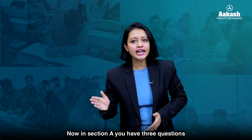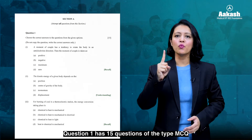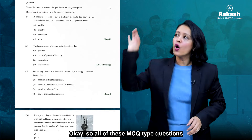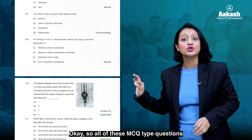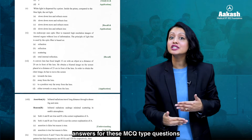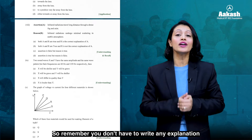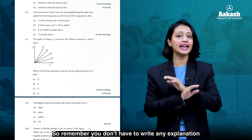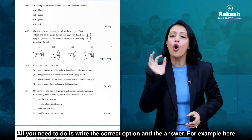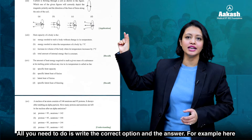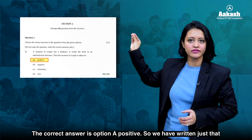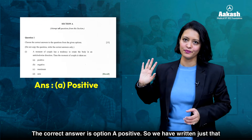In section A you have three questions. Question 1 has 15 questions of the MCQ type. All of these MCQ type questions are of one mark each. When writing the answers for MCQ type questions, you don't have to write any explanation or show the solution for numerical type questions. All you need to do is write the correct option and the answer. For example, if the correct answer is option A — positive — you just write that.